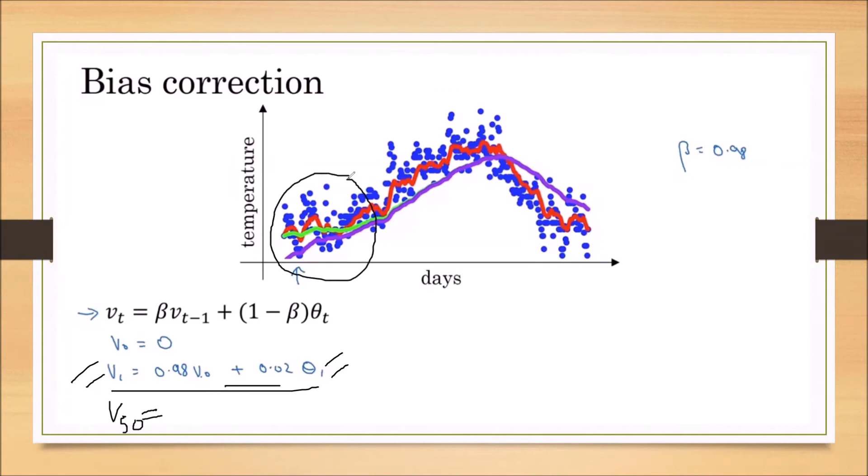Then we have to do the correction which we are calling as a bias correction. To do this correction, simply whatever the value we are getting in the initial stages, we have to divide it by 1 minus β power t. This t is the number we are taking. Example, if we are considering for one day moving average, we have to divide with 1 minus β.